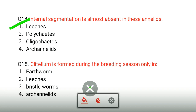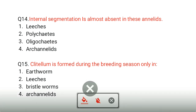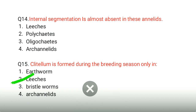In earthworms, segmentation is present both outside and inside. The clitellum is formed during the breeding season only — in leeches, the clitellum appears only during the breeding season.